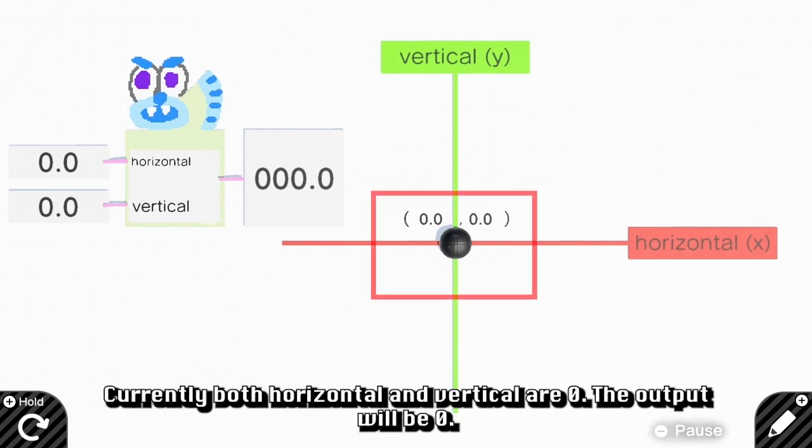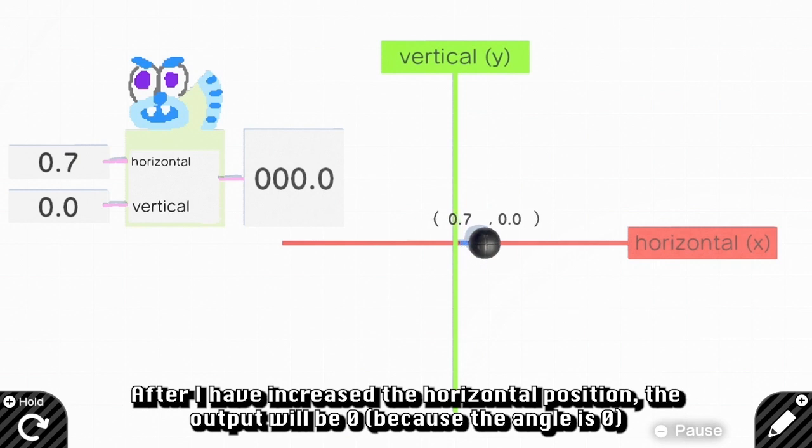Apparently, both horizontal and vertical have zero values, so the output will be 0. After I have increased the horizontal position, the output will still be 0.